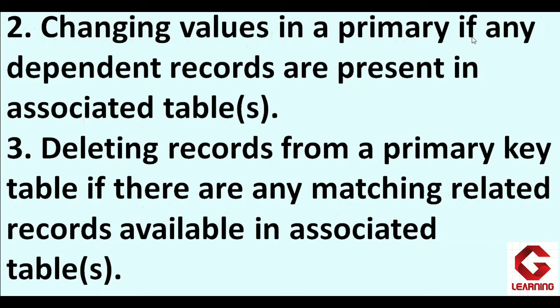The second point of referential integrity is that we cannot change a value in a primary key if any dependent records are present in the associated table. Since I have entered a record for roll number 2 in the marks table, I cannot now change that roll number in the student info table. I will demonstrate this.